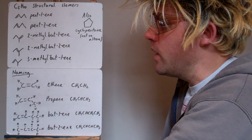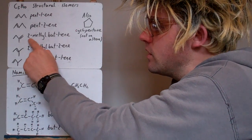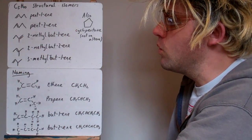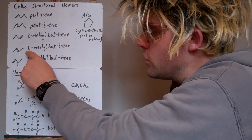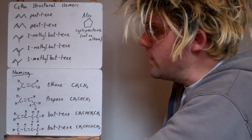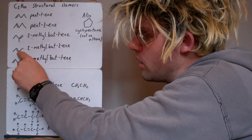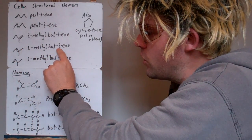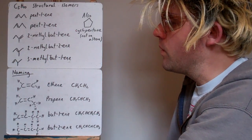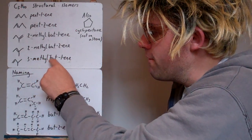Alkenes can be branched as well, so you've got to say where the branch is. So this is on carbon two, if you count from this end, one, two, two-methyl bute-1-ene. Here, two-methyl bute-2-ene, so if you count from this end, one, two, three, so the double bond's between carbons two and three, that's why it's two-ene. The methyl's on position two as well. Here, three-methyl bute-1-ene.